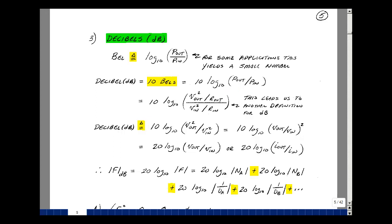10 times the log base 10 of power out to power in. But in this course, we're looking at mostly voltage out over voltage in. How is that related to power? It's the output voltage squared divided by, if there was an output resistance, its value. And likewise, the power in is the input voltage squared divided by the input resistance.